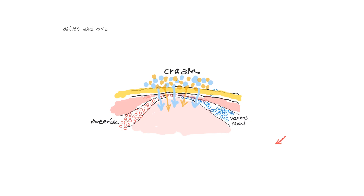Creams are salves that are made of 50% water and 50% oil. Creams are used to give transdermal access while retaining viability for a longer time than gels. They are a blend of water-soluble elements and oil-soluble elements that can cross the boundary to get into the blood.